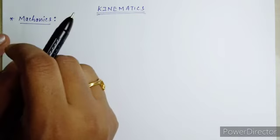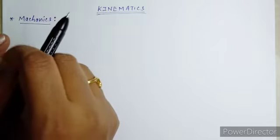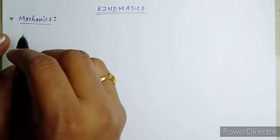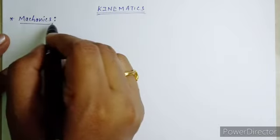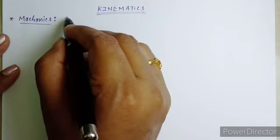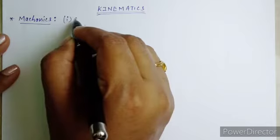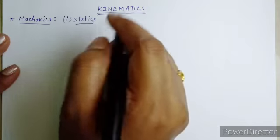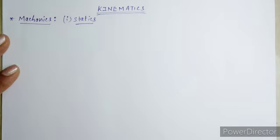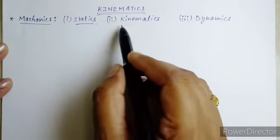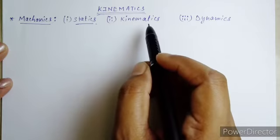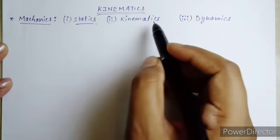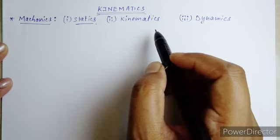Mechanics has basically three branches. The first one is Statics — it is a branch of mechanics which deals with the study of material objects at rest. The next one is Kinematics — it is that branch which deals with the study of motion of material objects.